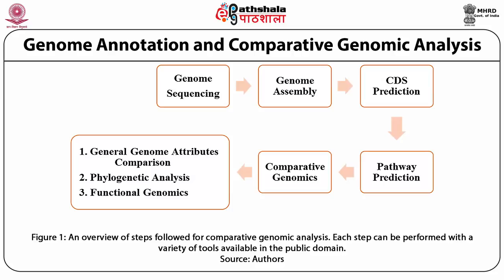Genome annotation and comparative genomic analysis consists of several steps beginning with genome sequencing. Once the genome has been sequenced, the next step involves genome assembly where reads are combined to form contigs. The contigs are further combined to form scaffolds, which together need to form the complete chromosome or genome. After genome assembly, the next step is CDS prediction followed by pathway prediction, and then comparative genomic analysis.